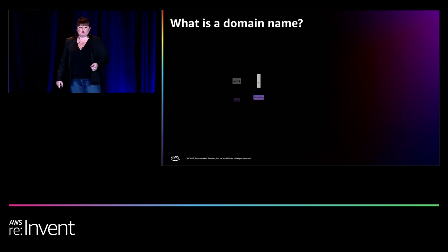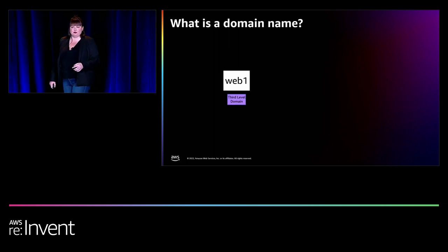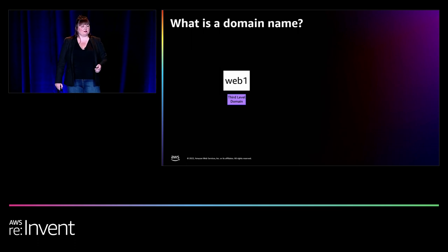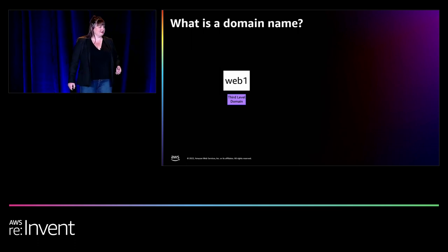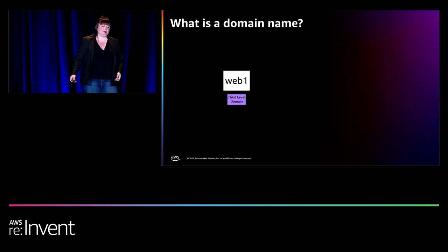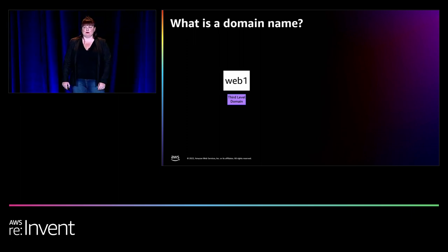And then we have web1 — this is a third-level domain sitting directly below Unicornpacket in the hierarchy. Third-level domains give you a way to structure contents in a meaningful way. So web1 refers to a web server serving up the Unicorn Packet website. But you could have web2, web3, web4 serving up different contents from the Unicorn Packet business.